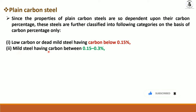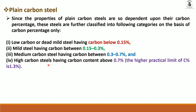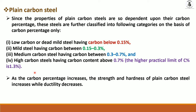Mild steel has a carbon range of 0.15 to 0.3%, where the addition of carbon into iron increases mechanical properties up to a certain limit. Medium carbon steel has carbon between 0.3 to 0.7%, and high carbon steel has carbon above 0.7% up to a maximum of 1.3 to 1.4%. As carbon percentage increases, strength and hardness of plain carbon steel increase while ductility decreases.